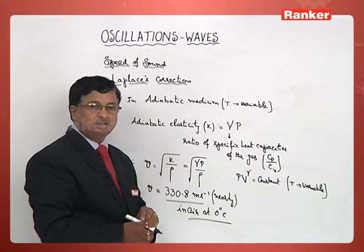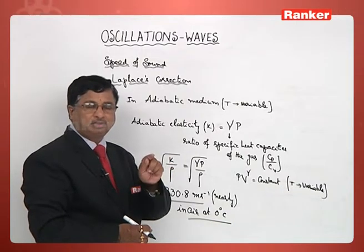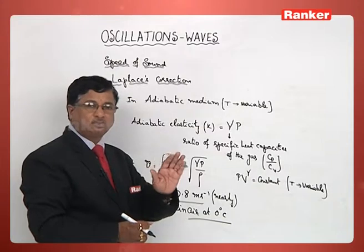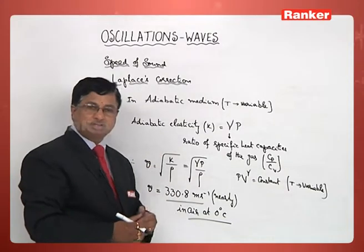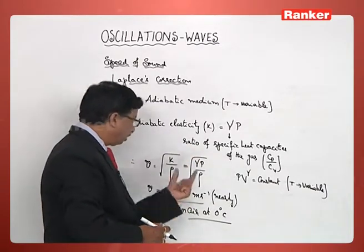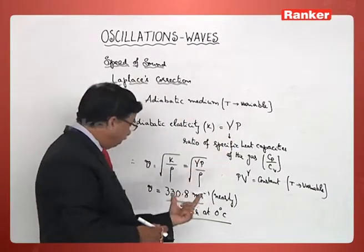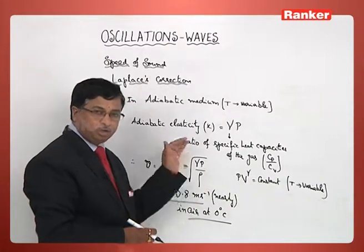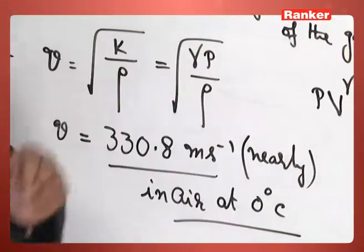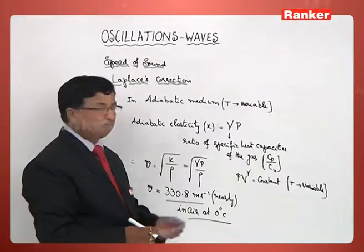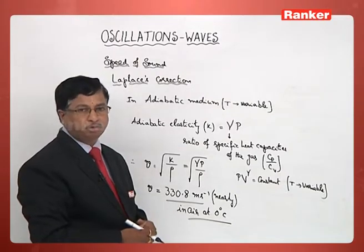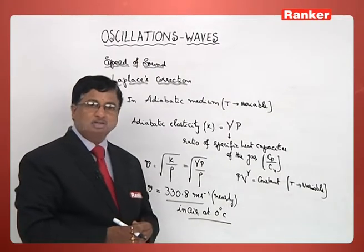We should not consider the medium through which sound is traveling as an isothermal medium. One should consider it to be an adiabatic medium. Then you will find the practically obtained value is in coincidence with the theoretically calculated value for speed of sound in air at 0 degrees centigrade. So this is the second concept we need to remember as far as speed of sound is concerned.